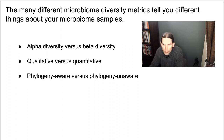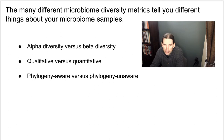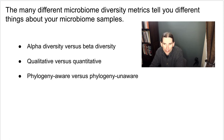The phylogeny-unaware metrics we talked about were observed features, Jaccard distance, and Bray-Curtis distance. Faith's phylogenetic diversity and unweighted and weighted UniFrac are phylogeny-aware metrics. I want to stress that one metric type is not always better than another — quantitative is not necessarily always better than qualitative, and phylogeny-aware is not always better than phylogeny-unaware. Rather, these tell us different things about our samples.